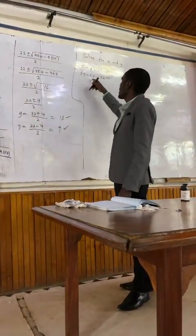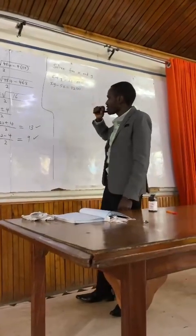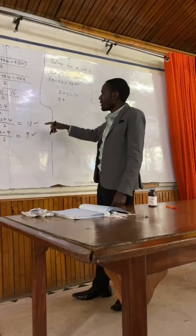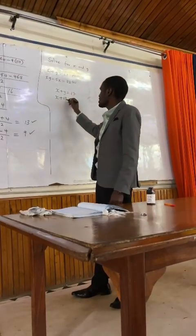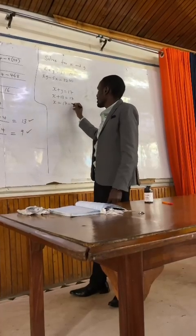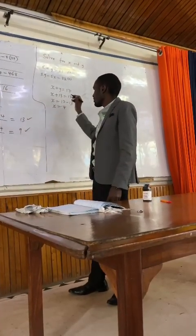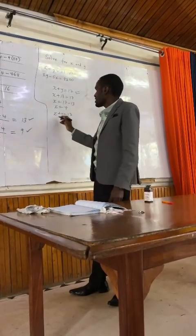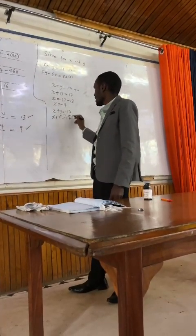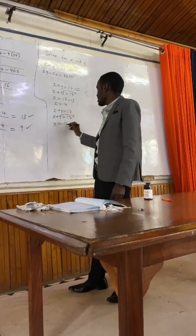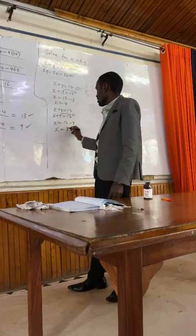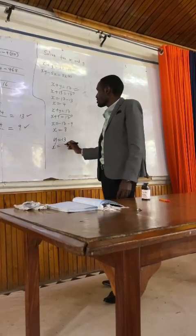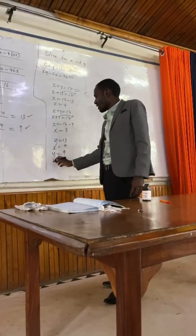We can pick those two values and use the equation x plus y equals 17 to get the values of x. When y is 13, x plus 13 equals 17, so x equals 17 minus 13, which is 4. When y is 9, x plus 9 equals 17, so x equals 17 minus 9, which is 8. So when y is 13, x is 4, and when y is 9, x is 8. Those are your answers to that question.